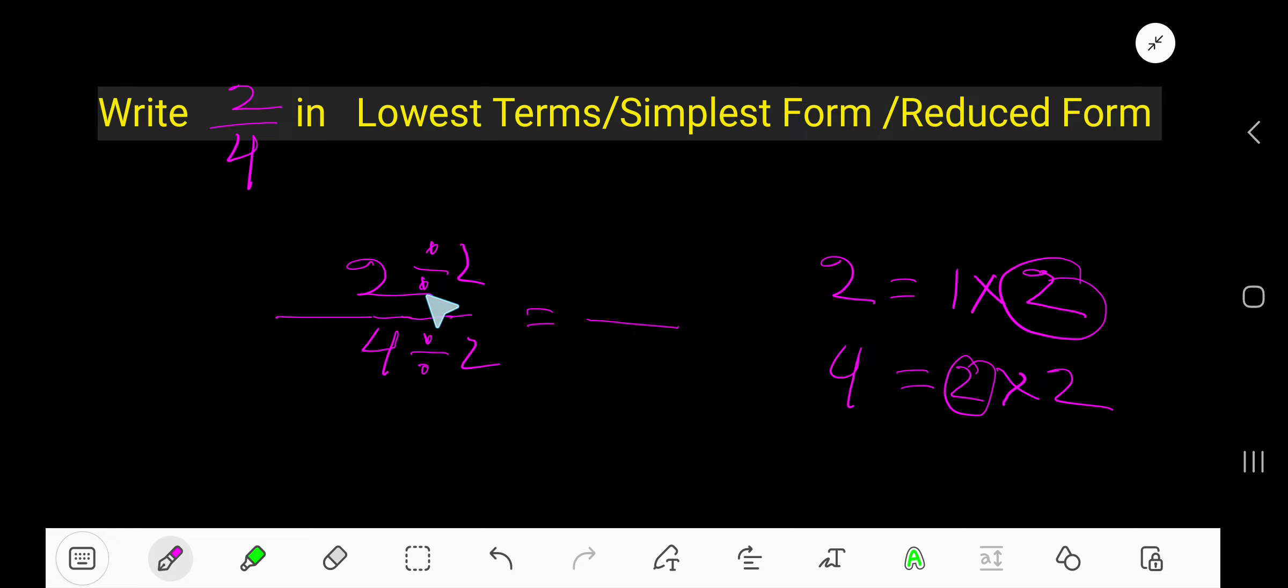So you are getting here 2 divided by 2, which is 1. 4 divided by 2 is 2. So 1 half is your answer, and this is the lowest terms.